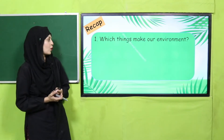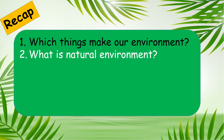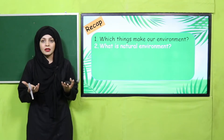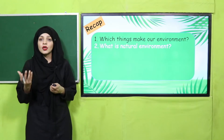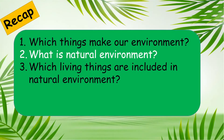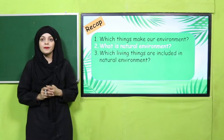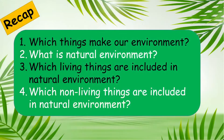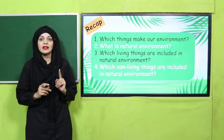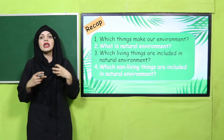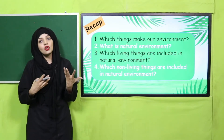Now let's answer the second question: what is natural environment? Natural environment is where everything is natural, not man-made — that is called a natural environment, made up of natural non-living things and living things. Which living things are included? Plants, animals, and human beings. Which non-living things are included? Sun, air, water, rocks, and mountains — these are all called natural non-living things and they make up the natural environment.